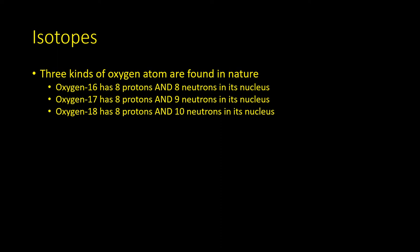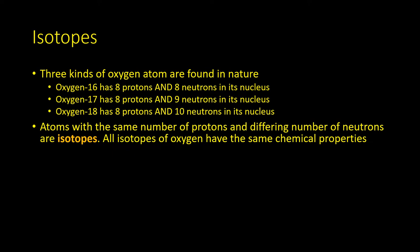Atoms which have the same number of protons and different number of neutrons are isotopes. All isotopes of oxygen have the same chemical properties; for instance, they all form water with hydrogen, H2O.